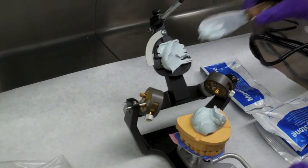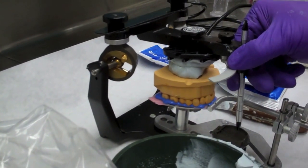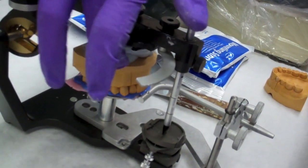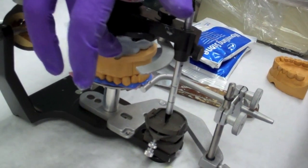Once stone has been applied to both sides, close the articulator. Note there will be voids. This step is only to secure the location of the maxillary cast on the articulator.